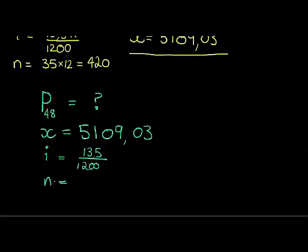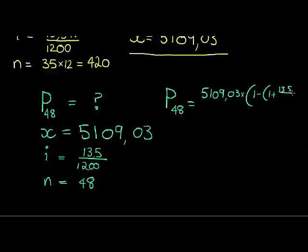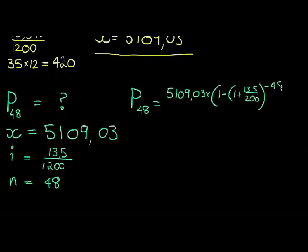The interest hasn't changed, it still stays 13.5 over 1200, and neither has... this time actually the number of payments that are left has changed. This is now 48. So what is the amount when 48 payments are still remaining? That's 5,109.03 times 1 minus (1 plus 13.5 over 1200) to the power of negative 48, divided by 13.5 over 1200.